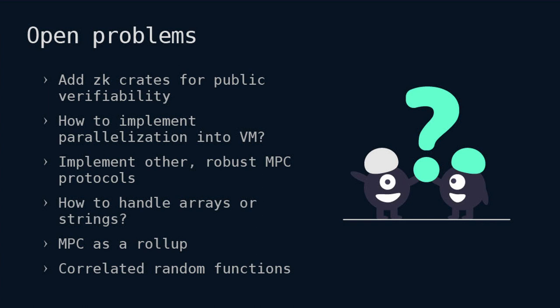The last open problem is about Beaver triples. If you remember, in the offline phase you constantly process Beaver triples and need interaction between nodes. In there you could use a pseudo-random function where the values are correlated with each other, so it would only require an interaction at the beginning.